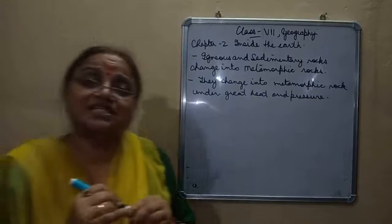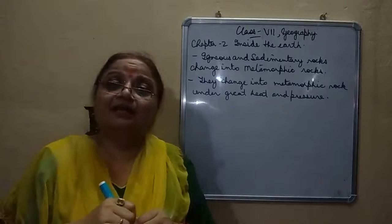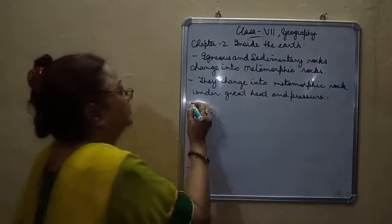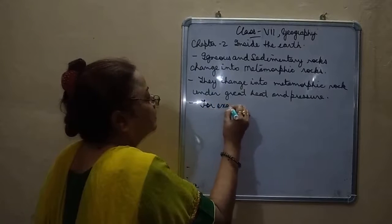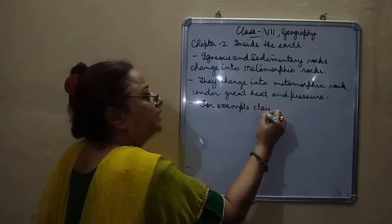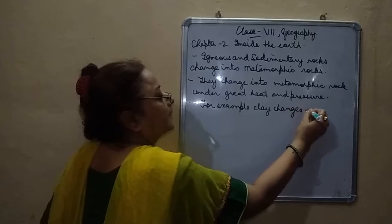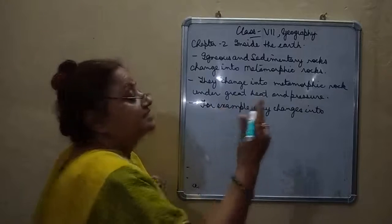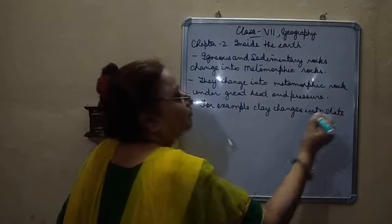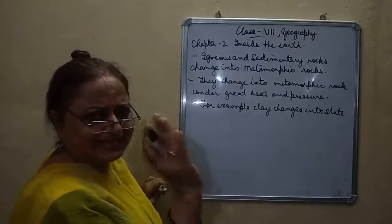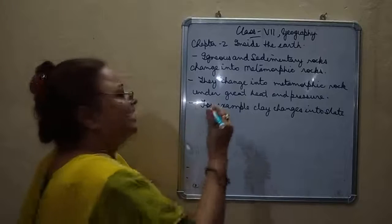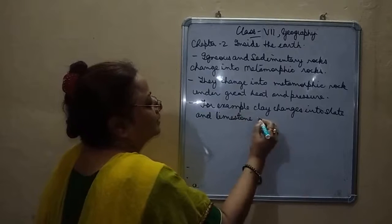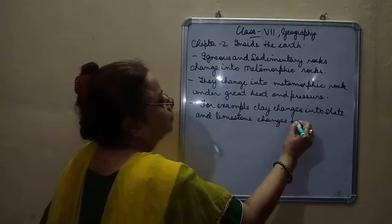There is a lot of heat and a lot of pressure. Clay changes into slate — clay, which is mitti, changes into slate, that black-colored material. And limestone changes into marble.